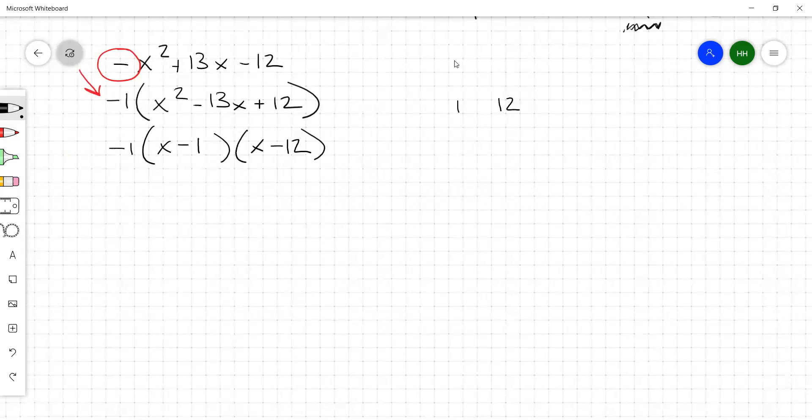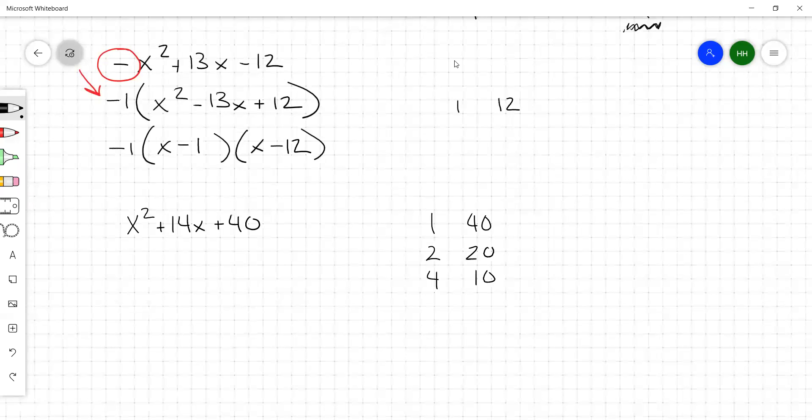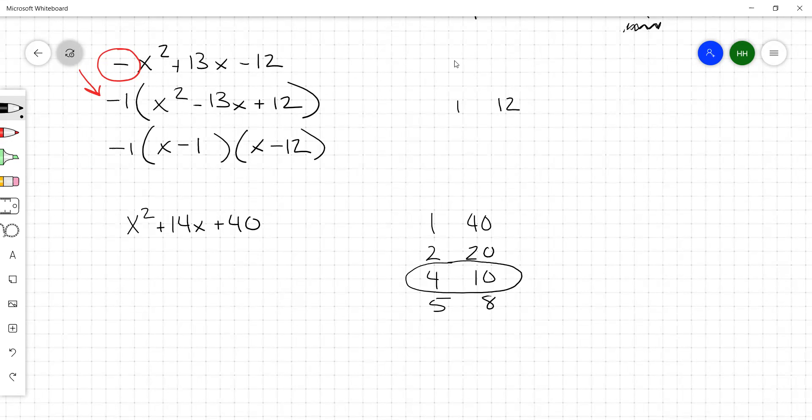All right, so x squared plus 14x plus 40. Factors of 40, we've got 1 and 40, 2 and 20, 3 doesn't go, 4 and 10. You can probably stop there, you've got 5 and 8, and that's it anyway. But with this 4 and with this 10 and everything being positive, 4 plus 10 is 14, 4 times 10 is 40, so here's your factors.